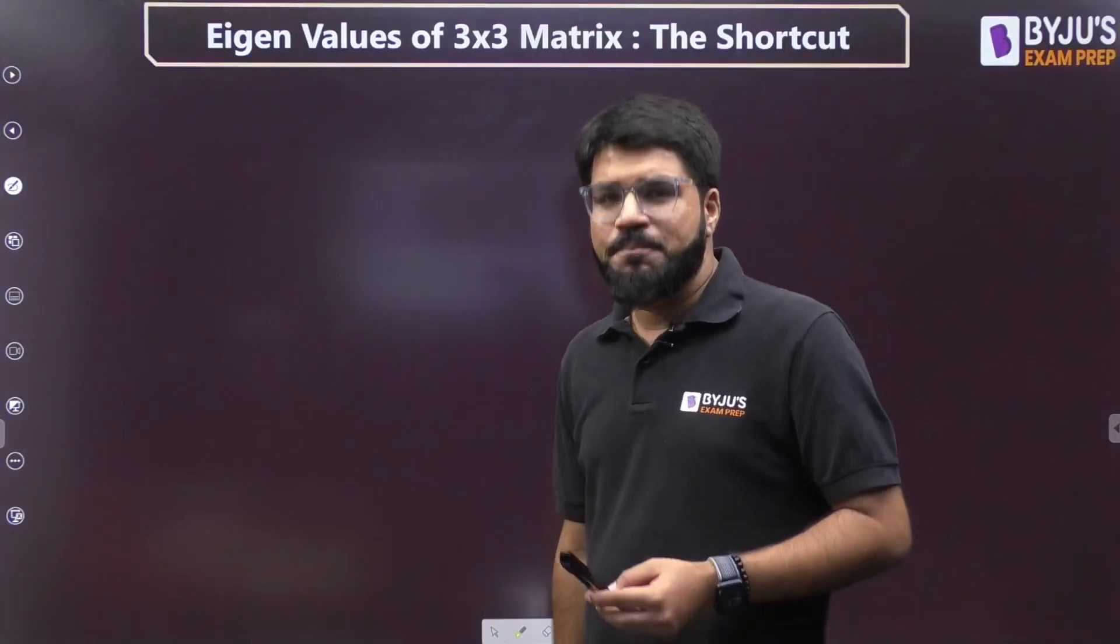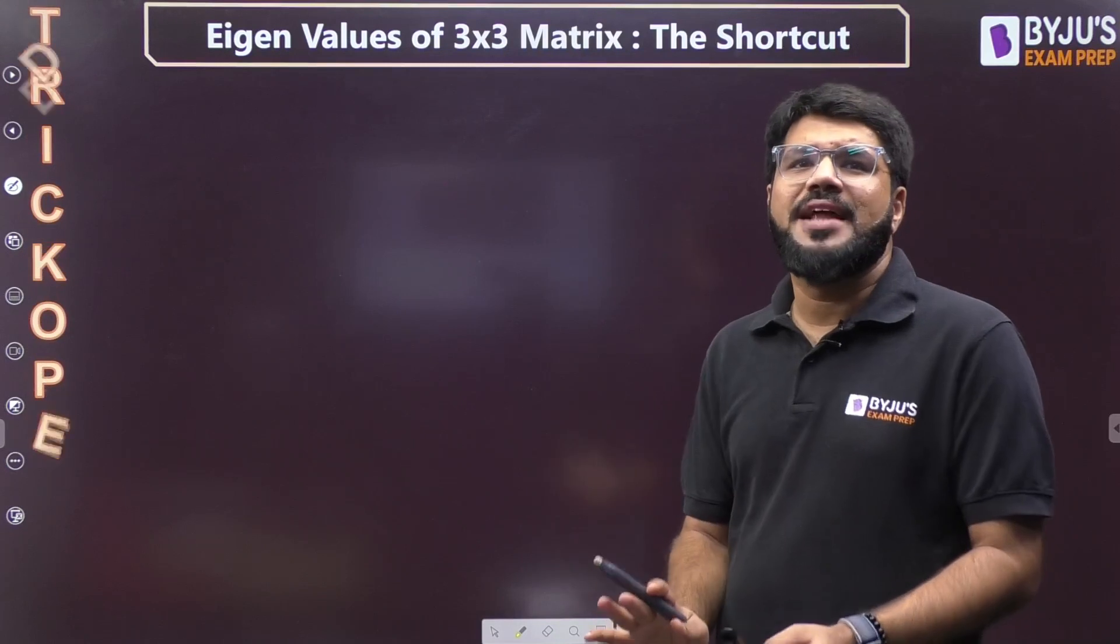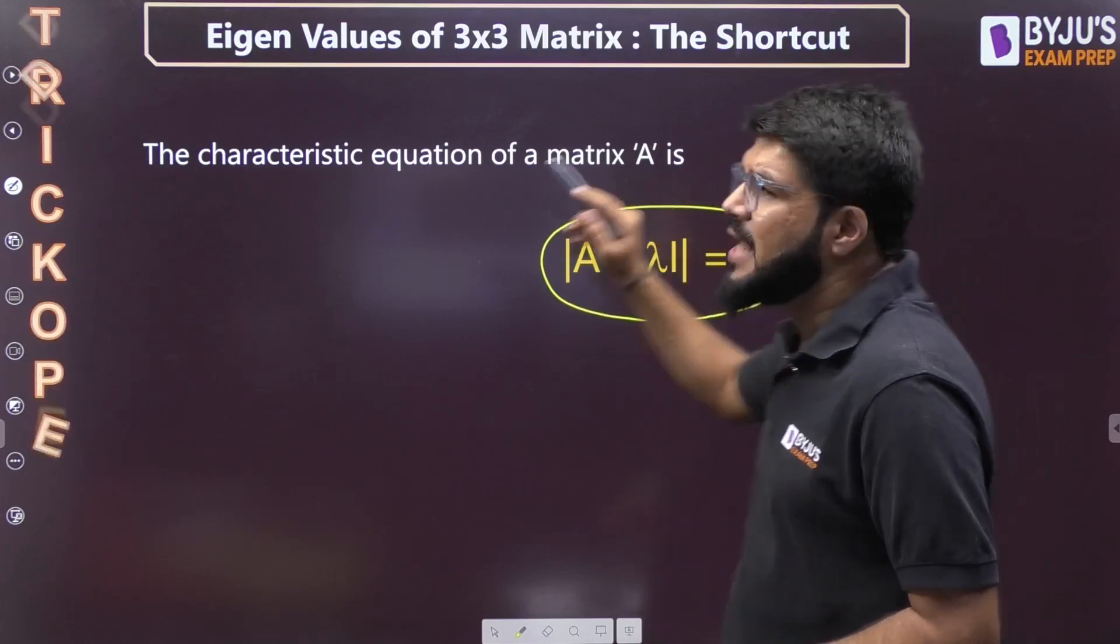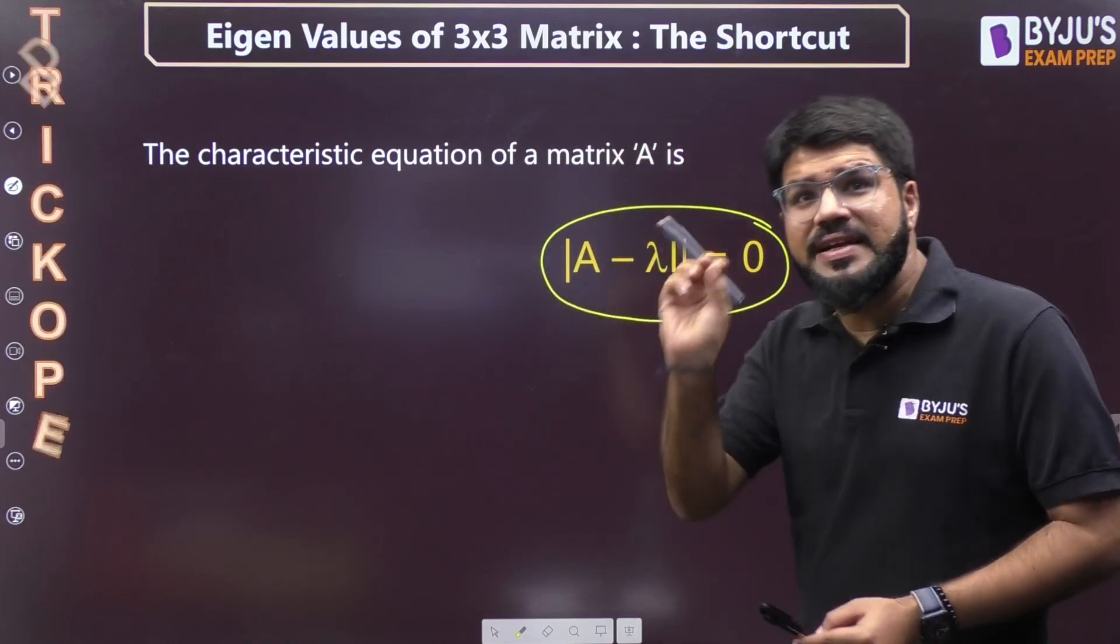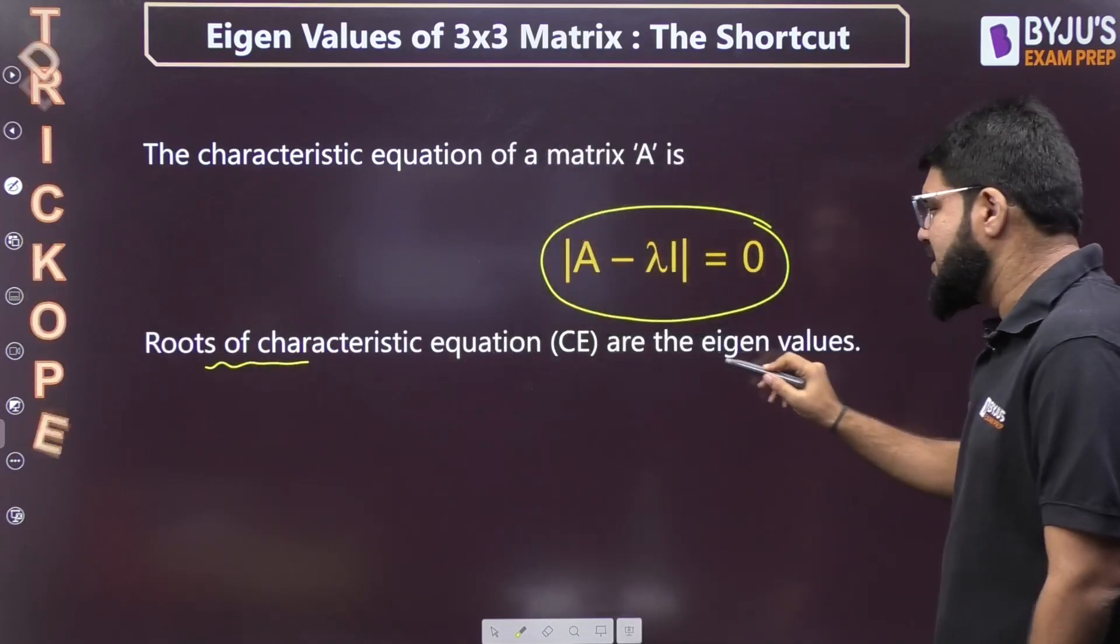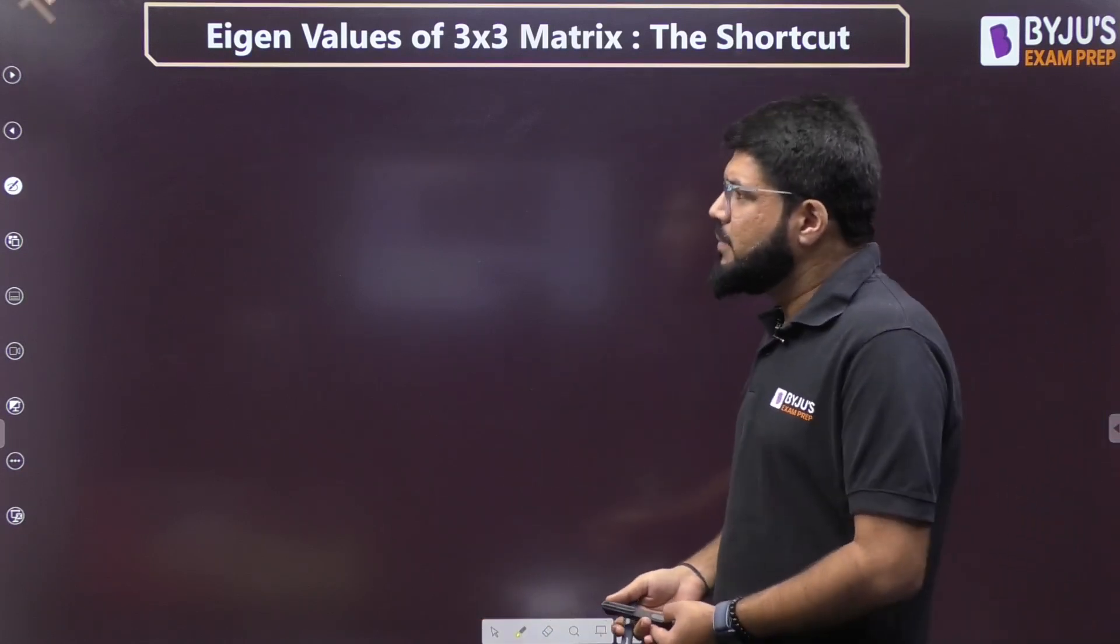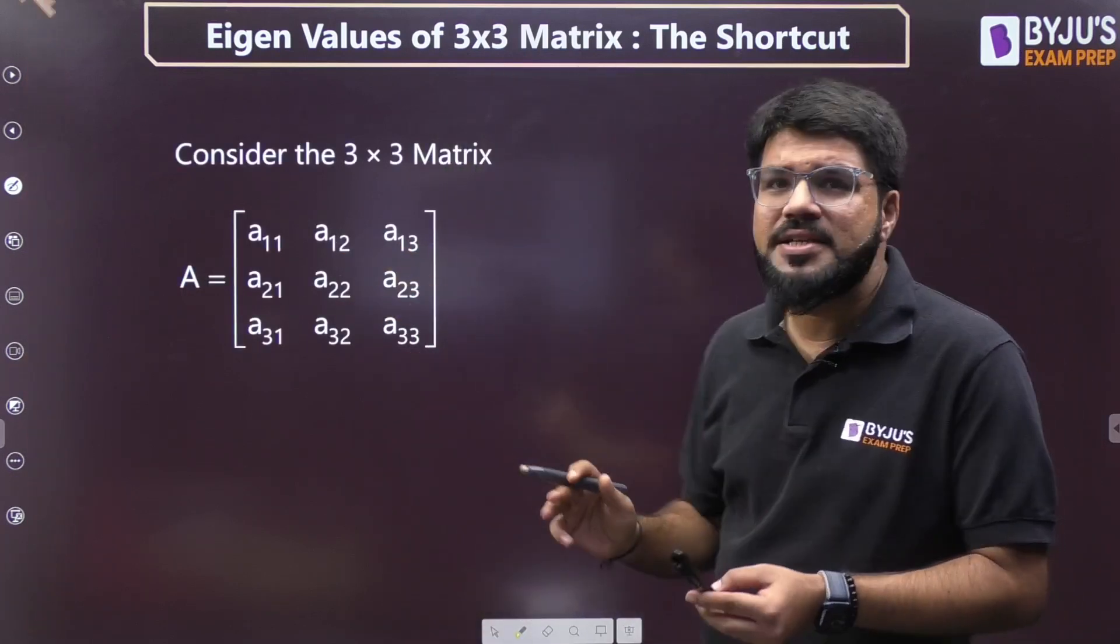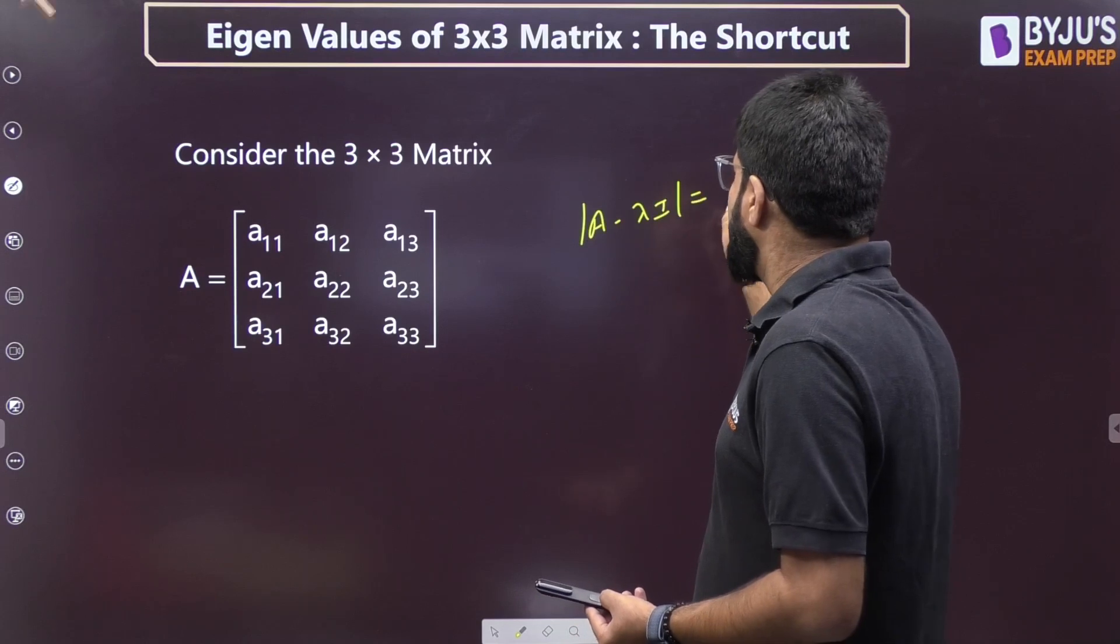Let's get started quickly. We all know that the characteristic equation of a matrix is given by |A - λI| = 0. When we solve this characteristic equation, the roots are the eigenvalues. Now, how do you normally solve it? Let's take a 3x3 matrix.